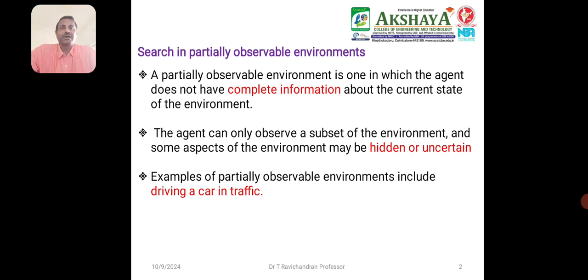For example, on a chessboard we automatically know how many boxes are available and how many moves are possible for each and every move. In the same way, a self-driving car does not know what will happen next — any accident that may happen. The car cannot fully understand that particular environment, so it does not have complete information. That agent is operating in a partially observable environment.